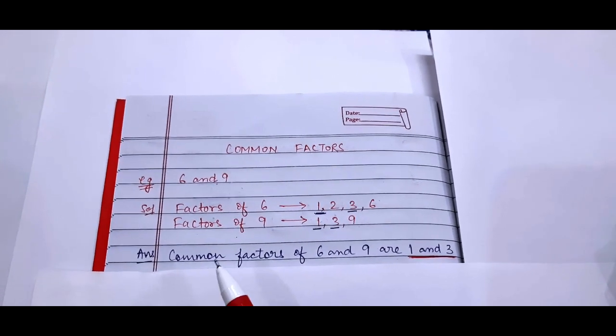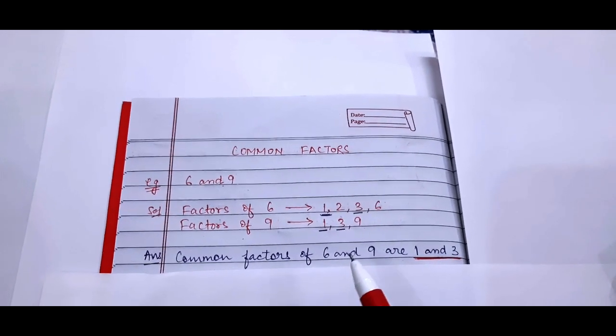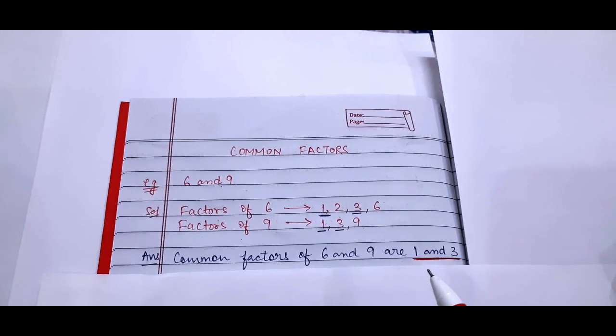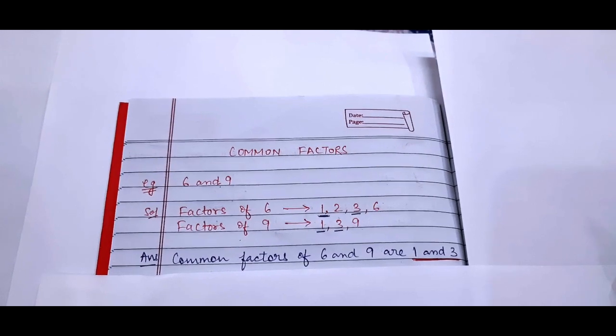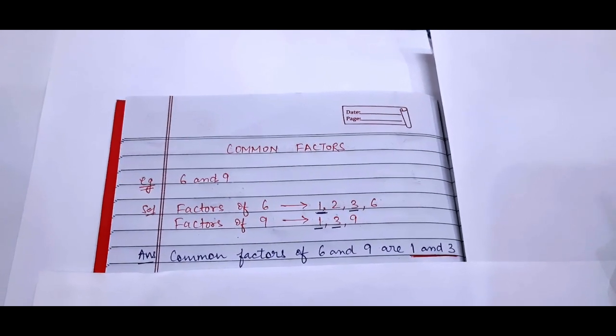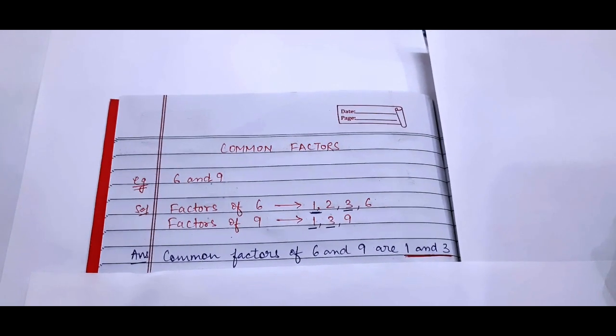So the answer will be common factors of 6 and 9 are number 1 and 3. Children in the similar way you can find out the factors of more than 2 numbers also. I hope it is clear to you.